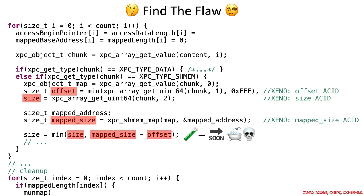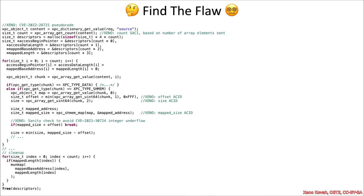What we really have is attacker-controlled values all around, so they get to control the size at the end of the day. Now you can go see the original write-up if you want to see how that could lead to an out-of-bounds write, but we're going to continue on to the OODA vulnerability.